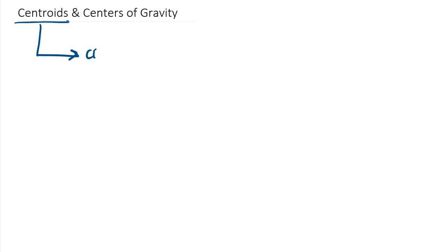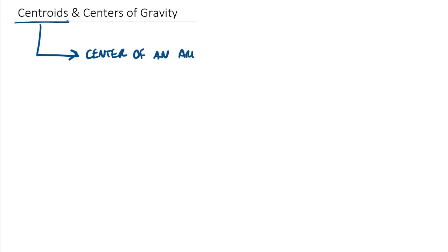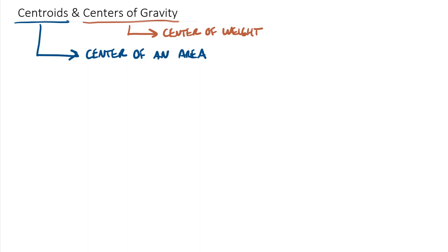Let's get into a few definitions. A centroid is the center of an area, and a center of gravity can be defined as the center of weight. We also have center of mass, and the center of mass and center of gravity are in the same location as long as you have a uniform gravitational field. In a two-dimensional object like a sheet of plywood, the centroid and the center of gravity would be in the exact same spot — these are closely related terms.